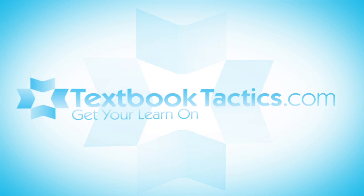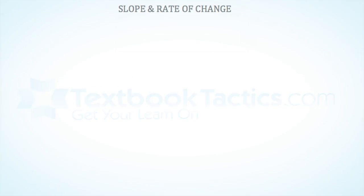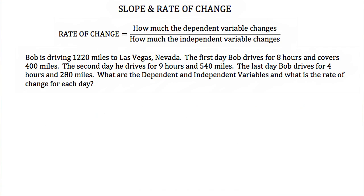This is a tutorial on slope and rate of change. A rate of change is simply how much the dependent variable changes divided by how much the independent variable changes.